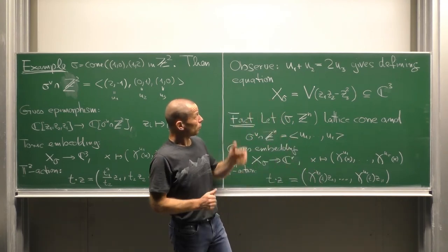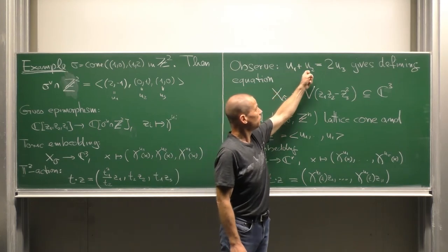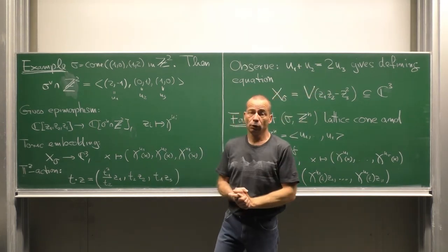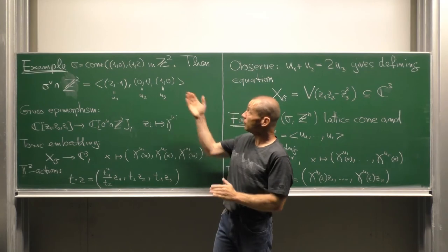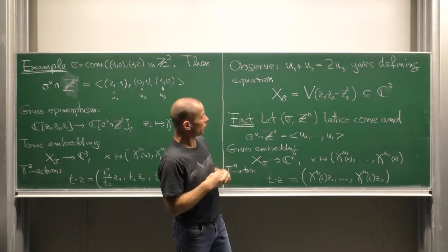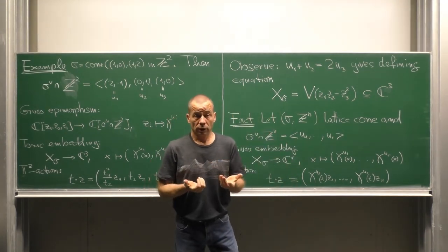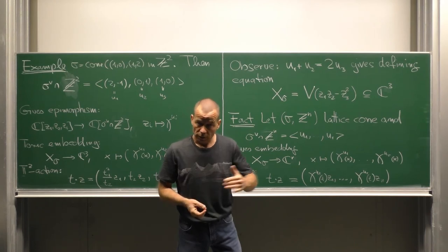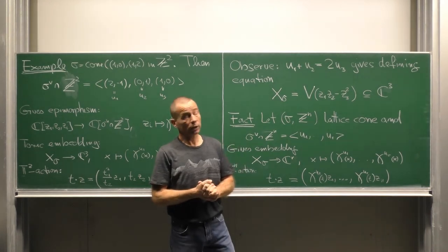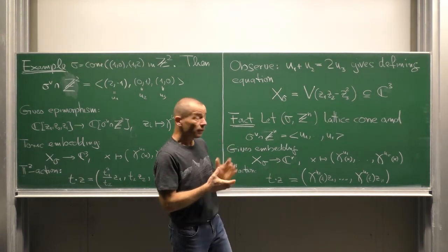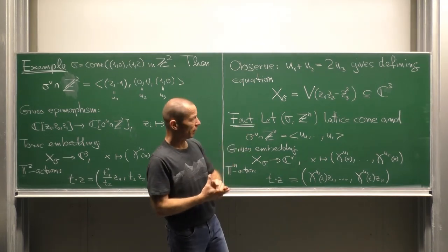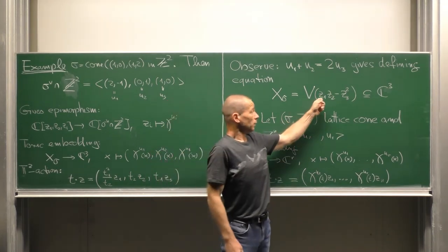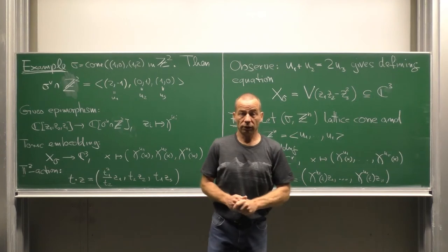Moreover, observe that we have a relation u_1 + u_2 = 2u_3 in the monoid. This relation gives a relation in the monoid algebra and thus a defining equation for our embedded X_sigma: z_1 z_2 - z_3^2.